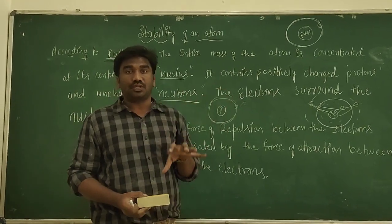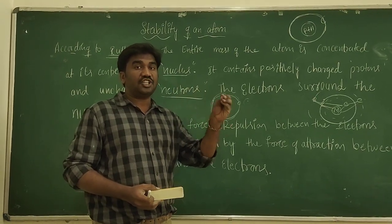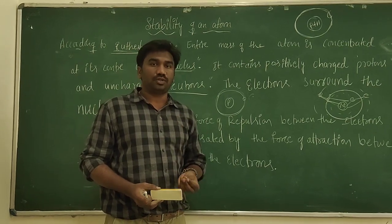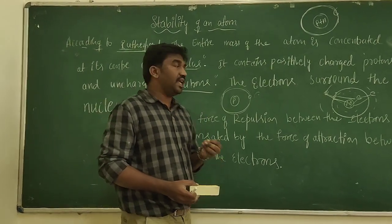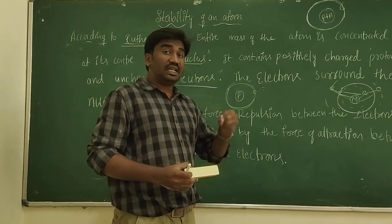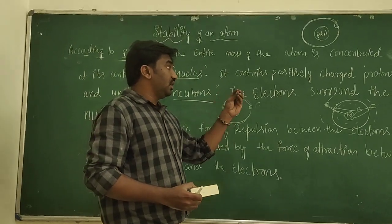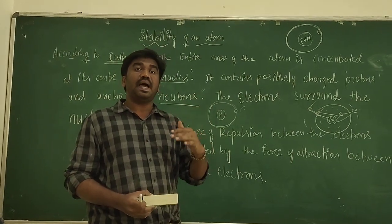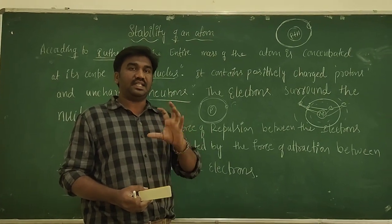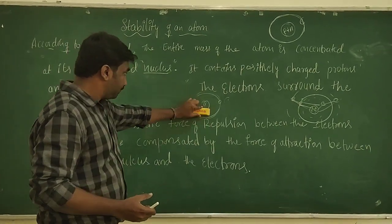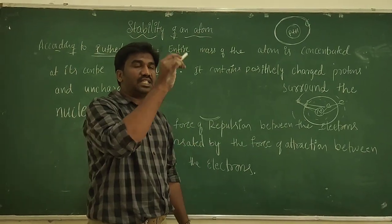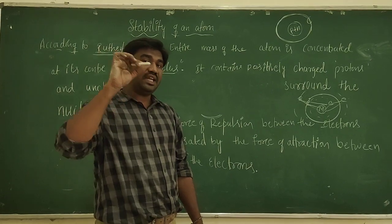Rutherford gave one more assumption: that the unbalanced electrostatic force of attraction or repulsion is balanced by centrifugal force, explaining this by assuming planetary motion. According to this assumption, the electrostatic atom would be stable. But we know that accelerated electrons emit radiation, so there is a problem.